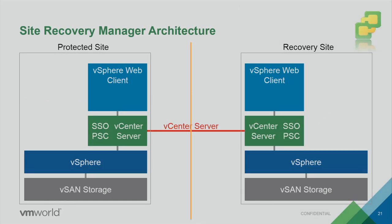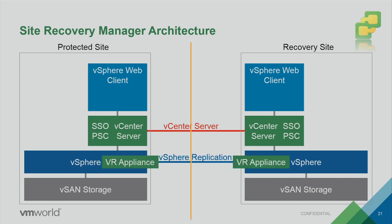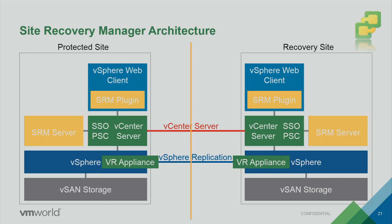You might have seen this SRM architecture slide if you're familiar with vSAN and VMware SRM. It shows vSAN storage with vSphere replication going across sites. I have a VMware vSphere client, an SRM server running on one side, and the SRM plugin has understanding of both sites, keeping them in pair mode. This is the higher-level SRM architecture for anyone not familiar with it.